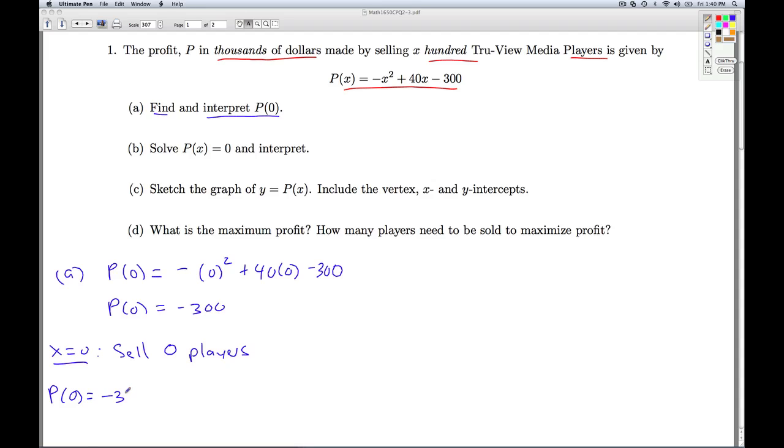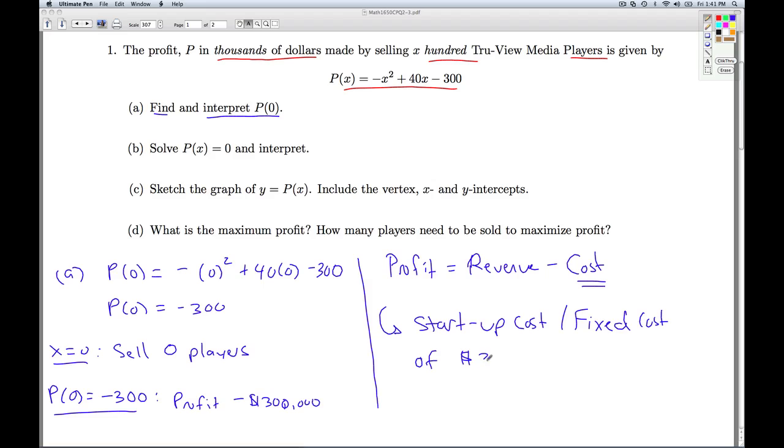The P of 0 being negative 300 tells us that the profit is negative $300,000. So as we talked about in class, profit is revenue minus cost. And the way we get the revenue is we take the number of things we sell times the price per item. So the revenue at 0 is going to be 0, which means the cost must be $300,000. So this means we have a startup cost or a fixed cost of $300,000. So that'll do it for part A.